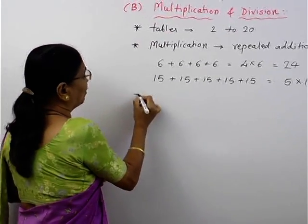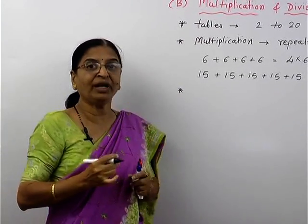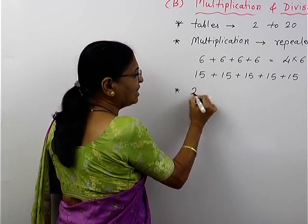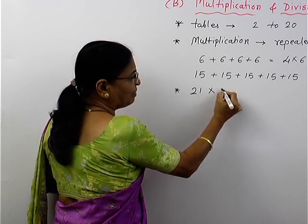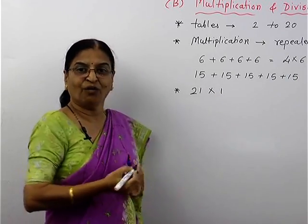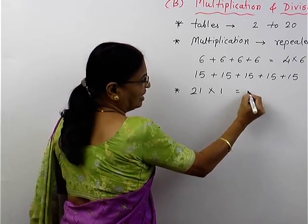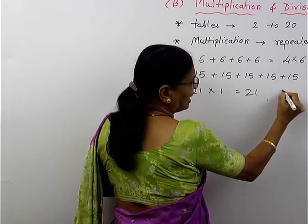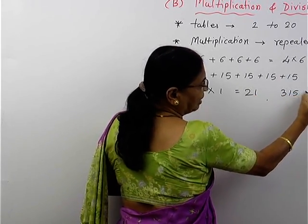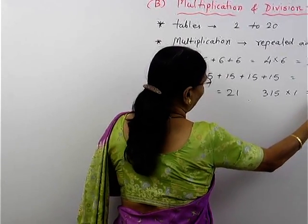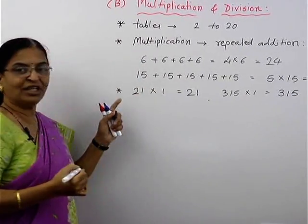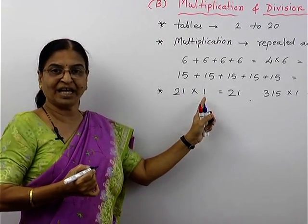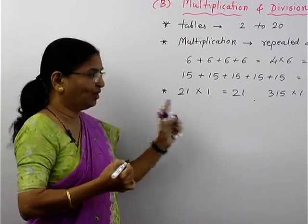The second important thing about multiplication: any number when multiplied by 1, what is the answer? The same number. For example, 315 multiplied by 1 will give the same answer, 315. This is a very important property about multiplication by 1.